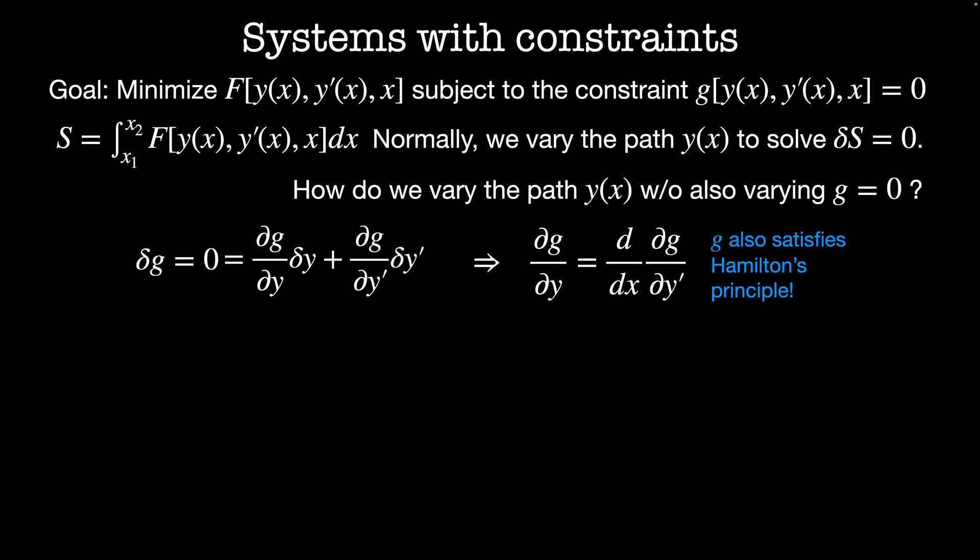This means that g also satisfies Hamilton's principle. The path that minimized variations in g is also the one for which g is stationary, which means that delta g equals zero.